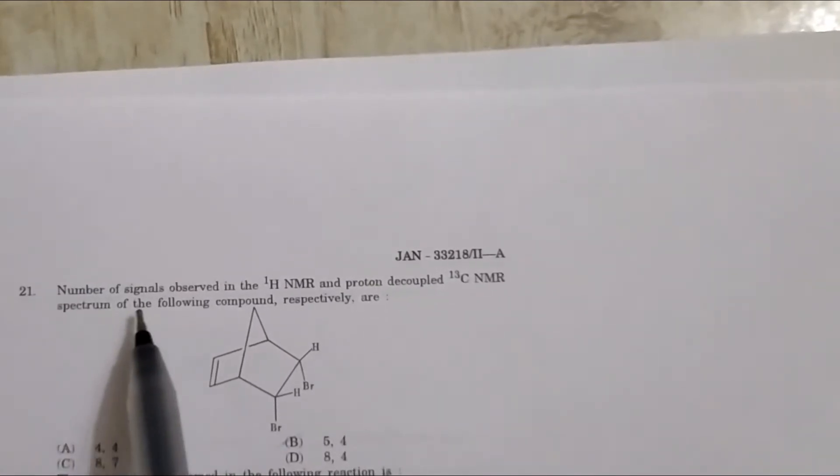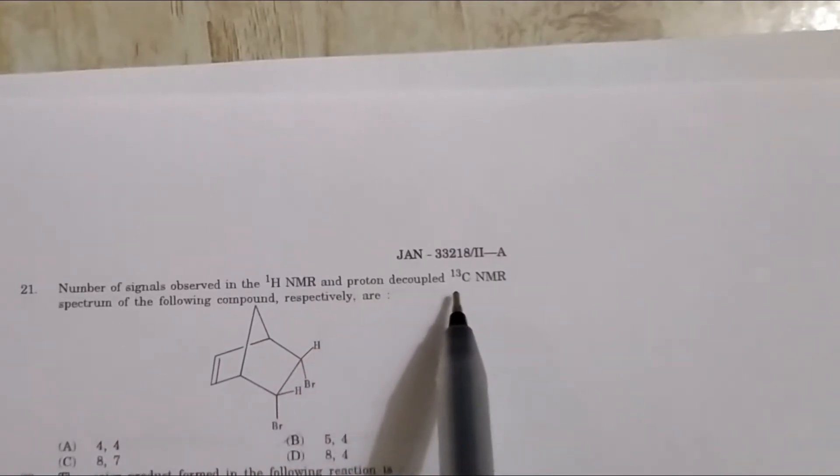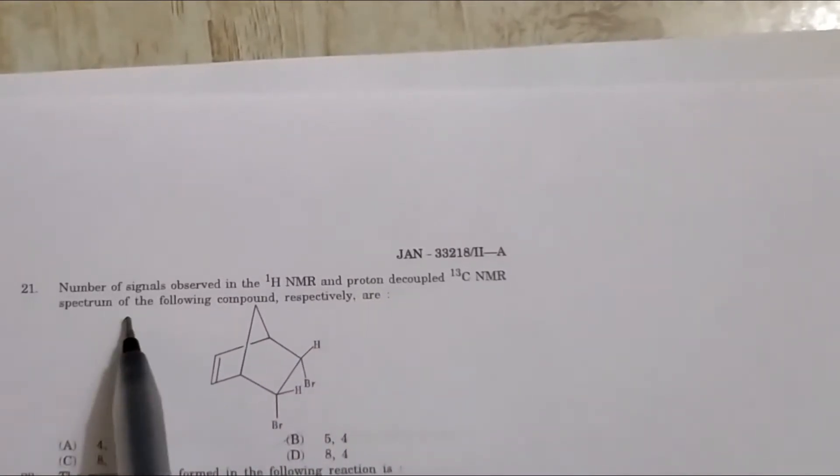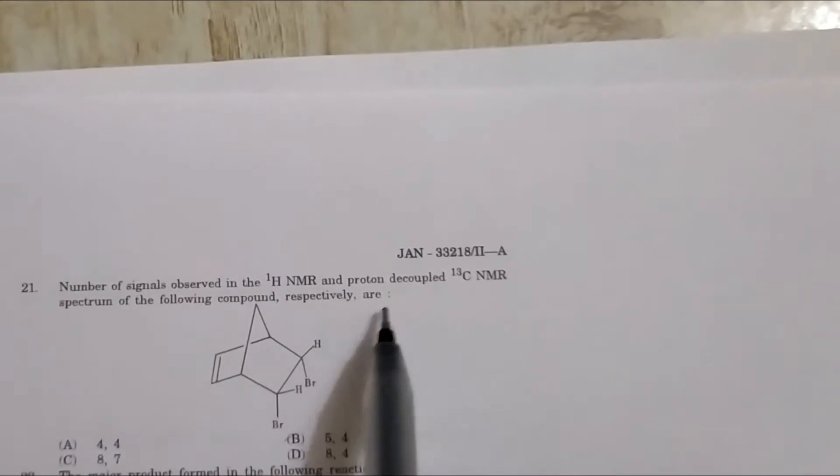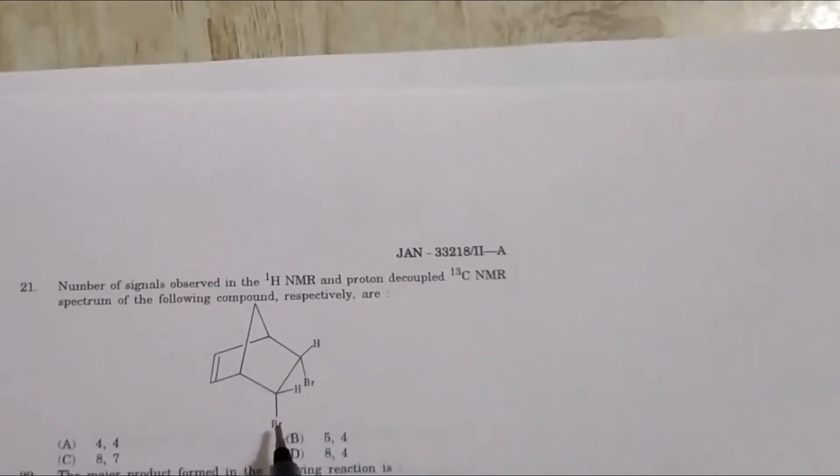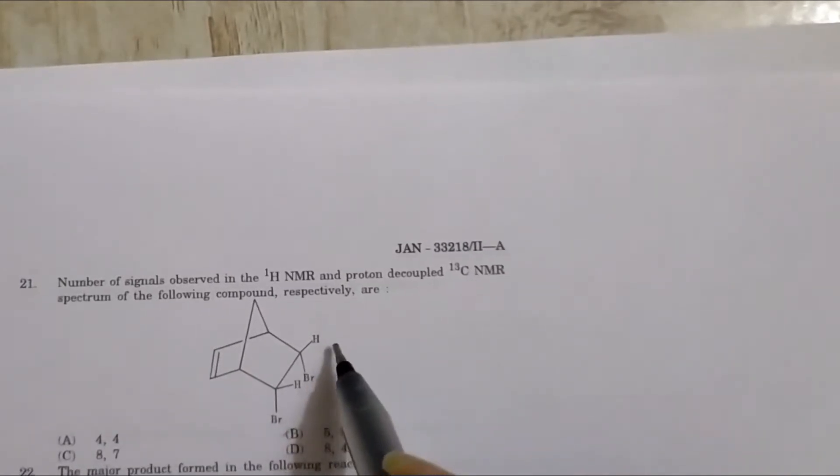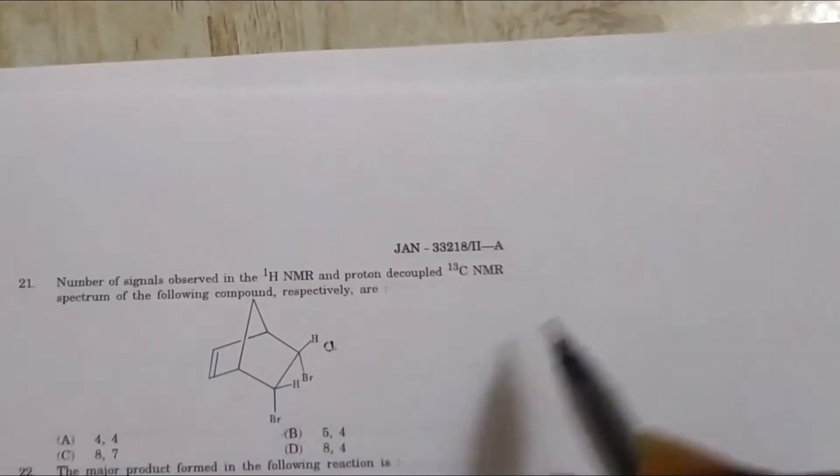So let's see, the number of signals observed in H1 NMR and proton decoupled 13C NMR spectra of the following compounds, respectively. This is the structure given. So first we go for H1 proton. See, this proton and this proton is the same, so we label as A. I am drawing here.